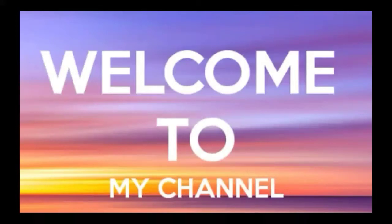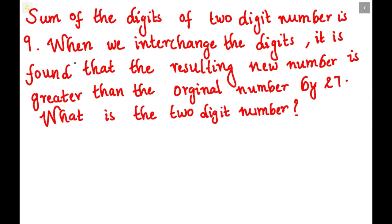Welcome to my channel. We are going to solve a new problem: the sum of the two digits of a two-digit number is nine. When we interchange these digits, it is found that the resulting new number is greater than the original number by 27. What is the two-digit number?